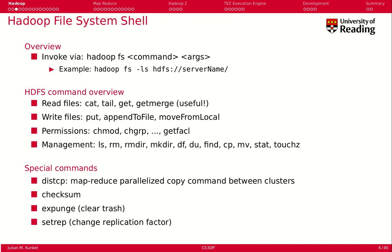Hadoop comes with a file system shell for accessing and interfacing with the file system. In the virtual machine, you use the command 'hadoop fs' followed by a Unix-style command such as 'ls', optionally with an HDFS path prefix. You can typically omit the prefix and just give a normal hierarchical file name as an absolute or relative path.